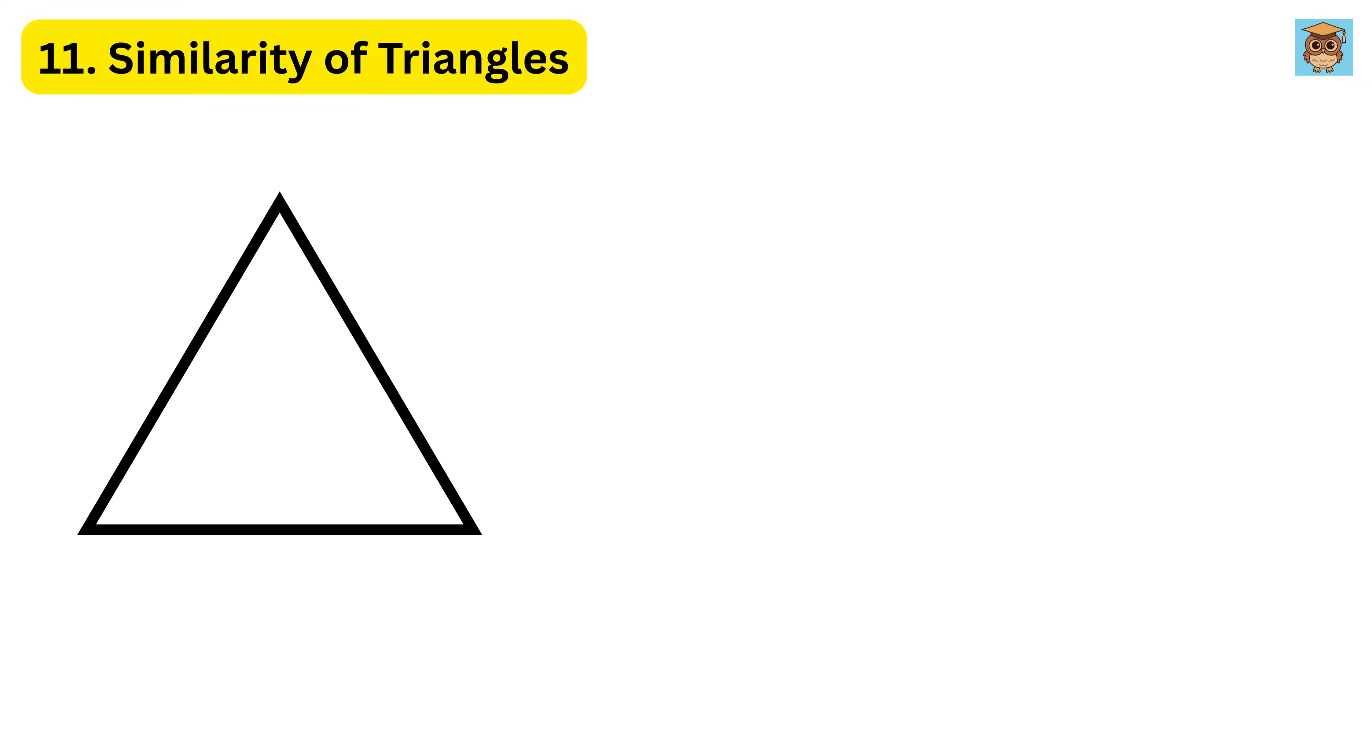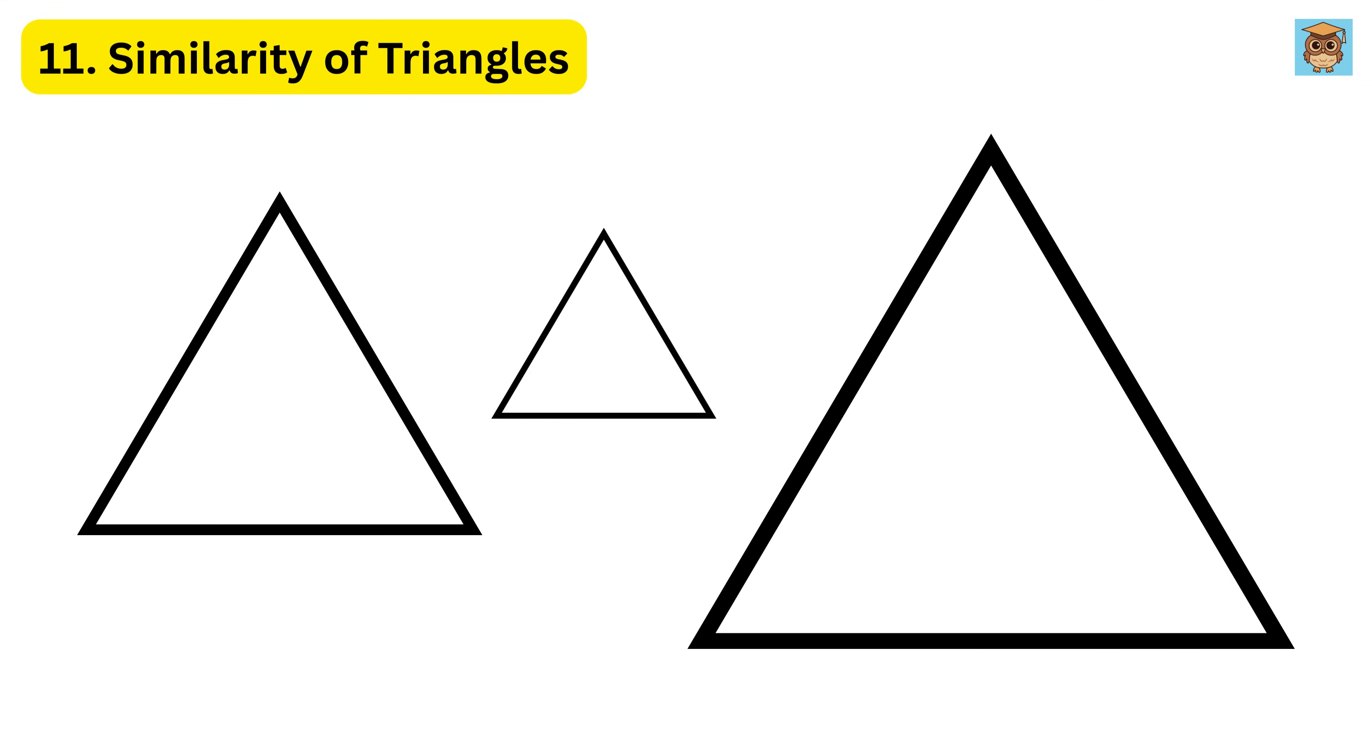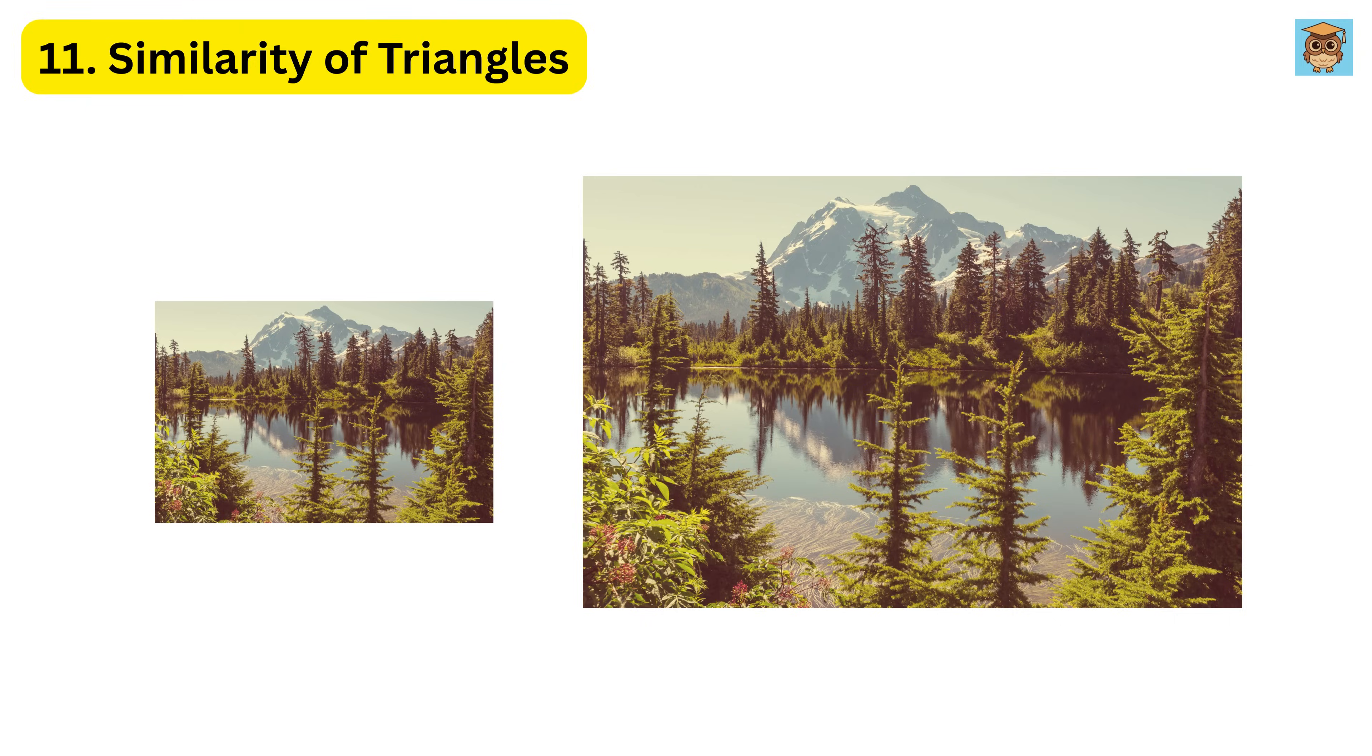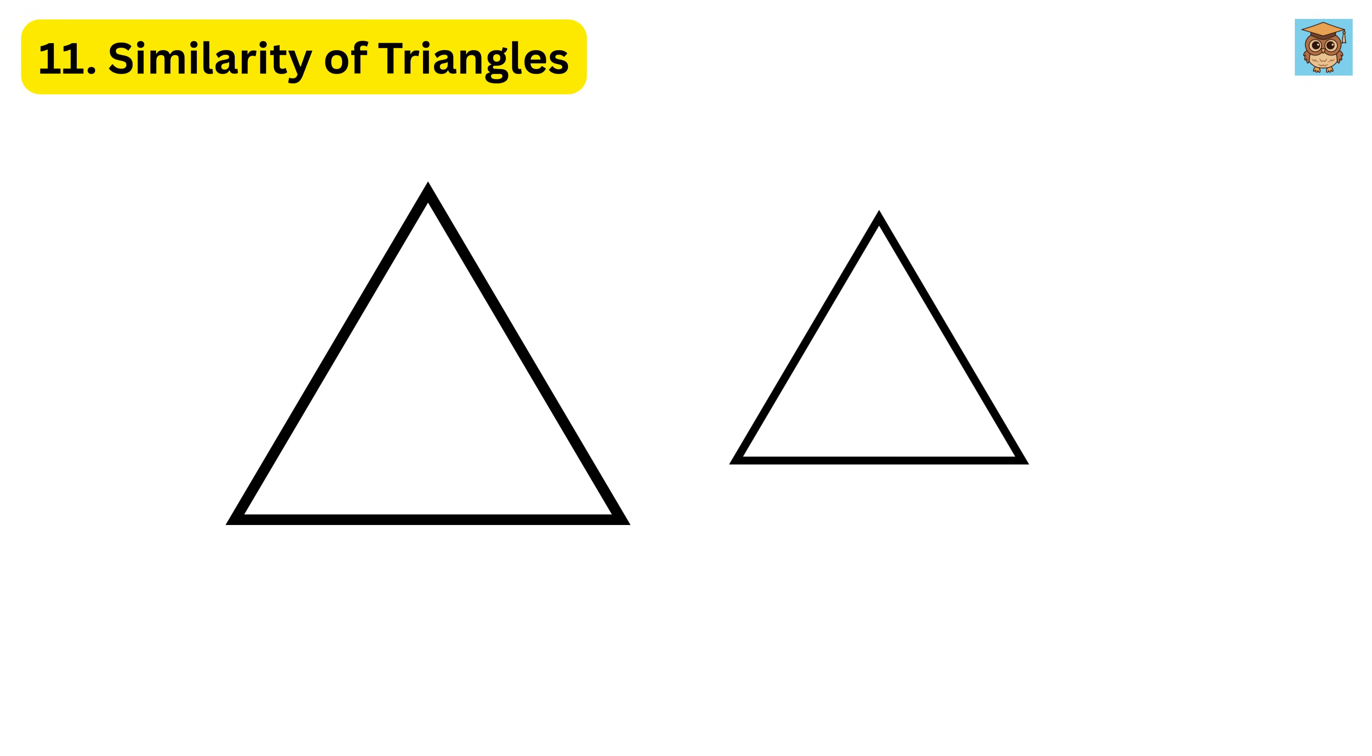11. Similarity of Triangles. Similar triangles look alike, but can be different in size, like a big and small version of the same photograph. There are three main ways to check similarity. First, the angle-angle rule. If two angles of one triangle are the same as two angles of another, the third angle must also be the same, making the triangles similar.